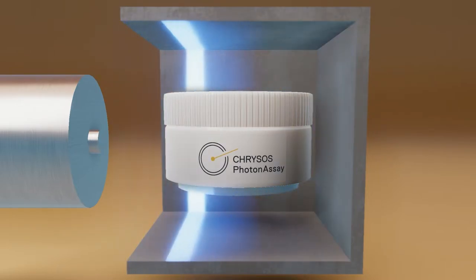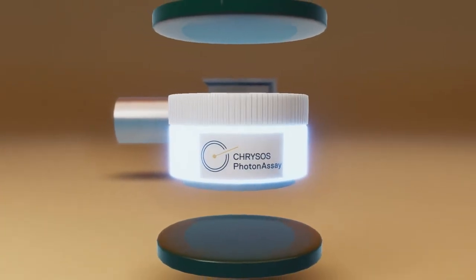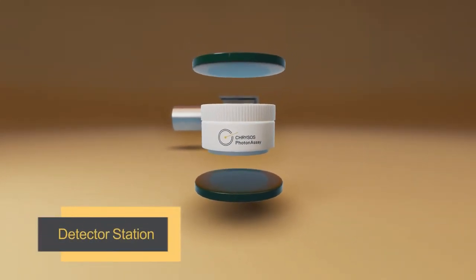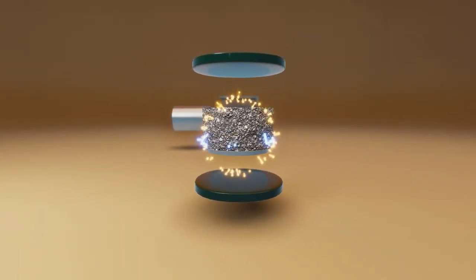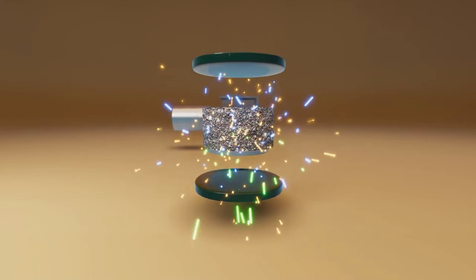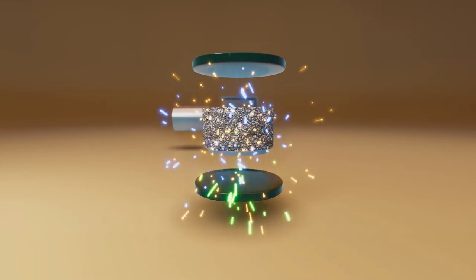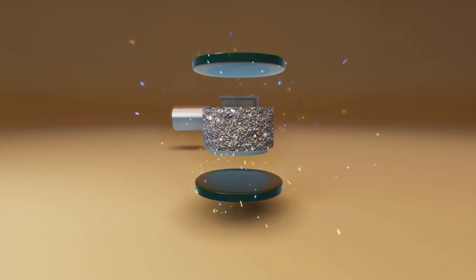After a period of irradiation, typically 15 to 20 seconds, the sample is transferred rapidly to a detector station using a robotic shuttle. As the excited gold nuclei relax back to the ground state, they emit gamma rays with a characteristic energy of 279 keV.